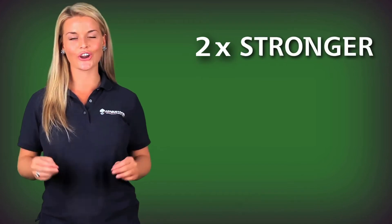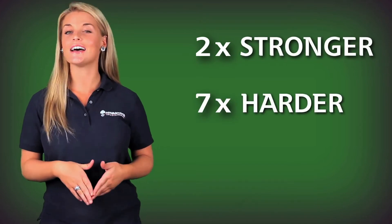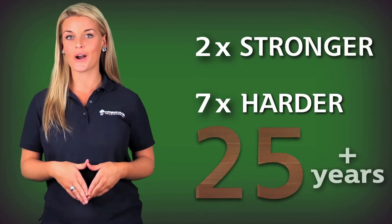our Mass Run Duba Decking is 2 times stronger, 7 times harder, and has a lifespan well over 25 years.